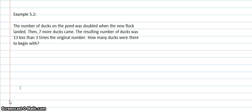The next example in Lesson 5 is another word problem, and this time we're trying to find the number of ducks that were originally on the pond. Again, first we just want to read through the problem: 'The number of ducks in the pond was doubled when the new flock landed. Then 7 more ducks came. The resulting number of ducks was 13 less than 3 times the original number. How many ducks were there to begin with?' We're going to take it in parts to set up our equation to solve for the number of ducks.